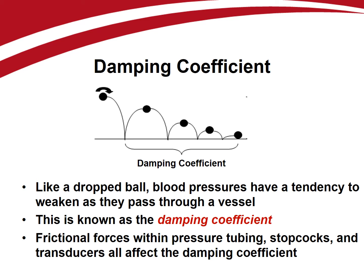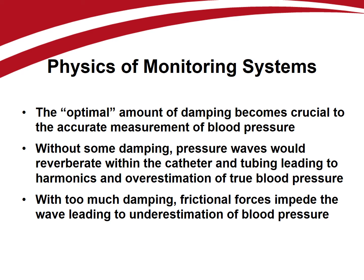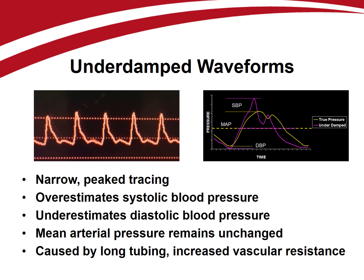Frictional forces within pressure tubing, blood clots, air bubbles, the presence of stopcocks, and pressure transducers all affect the damping coefficient. Appropriate dynamic response is crucial to the accurate measurement of blood pressure. Without some damping in the pressure monitoring system, the pressure waves would reverberate back and forth within the catheter and tubing, leading to multiple harmonic waves and overestimation of the patient's true blood pressure. With too much damping, however, frictional forces would impede the waves, leading to underestimation of blood pressure. There are thus two types of pressure waveforms — underdamped and overdamped — based upon the dynamic response artifacts present, and both are encountered daily while monitoring patients in the ICU.